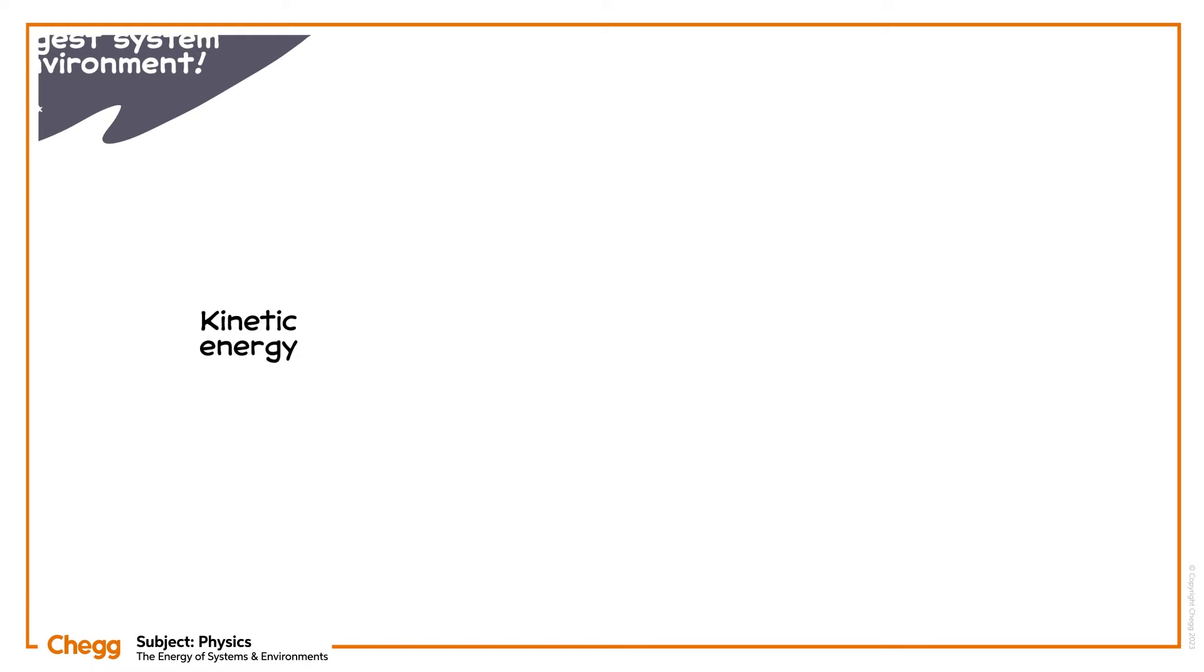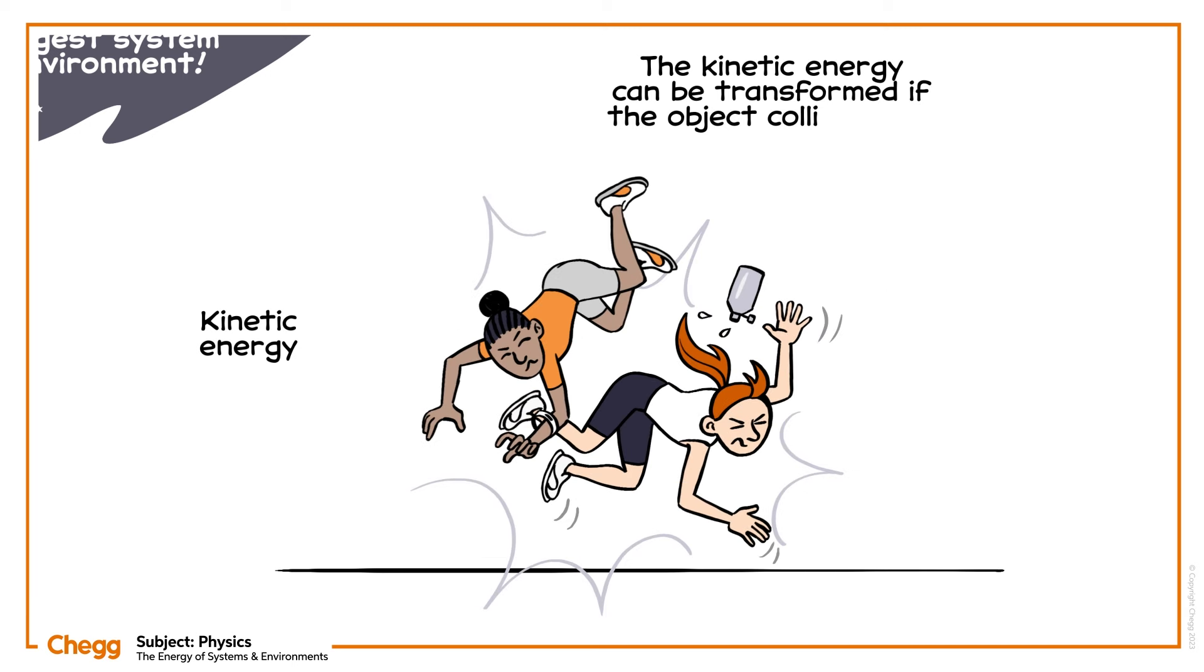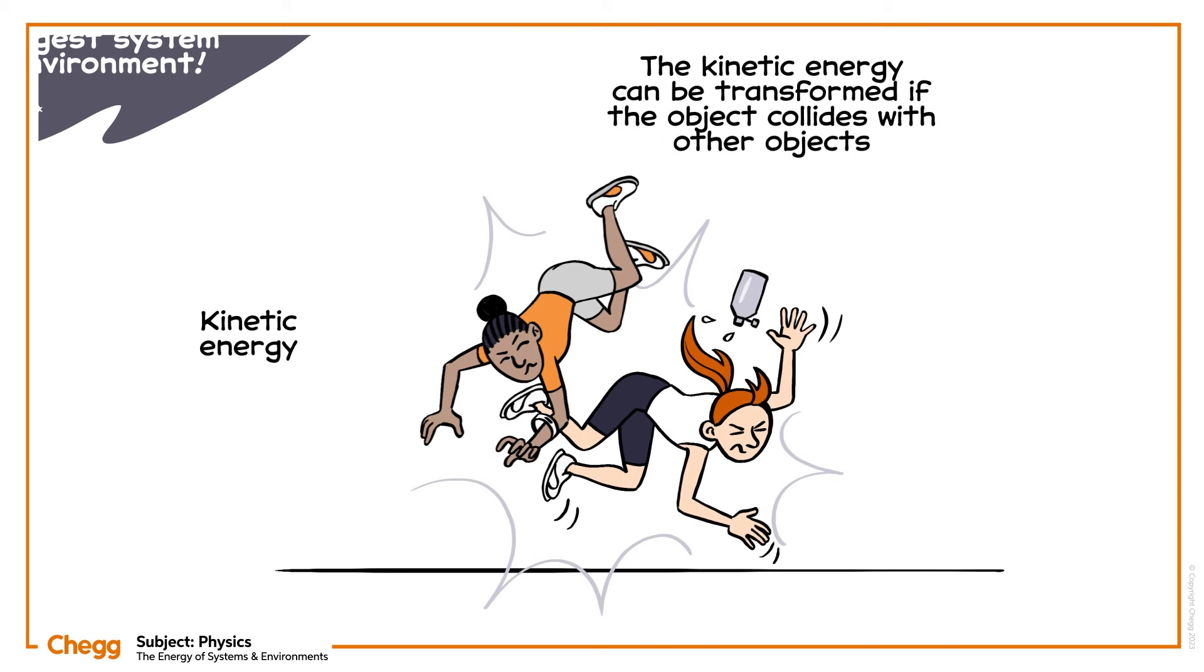They need to convert other forms of energy into kinetic energy. So a runner, for example, will need to convert the chemical energy of food and nutrients into the kinetic energy required to run. In turn, kinetic energy can be transformed into other forms of energy or passed on if the object collides with other objects. We can determine kinetic energy using mass m and velocity v in this formula where K equals one-half mv squared.